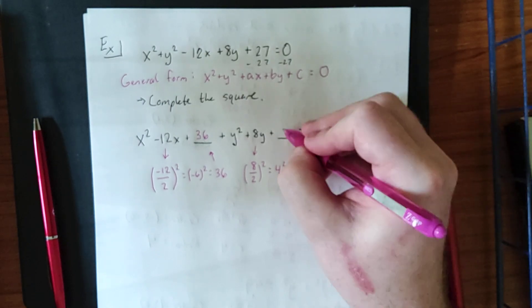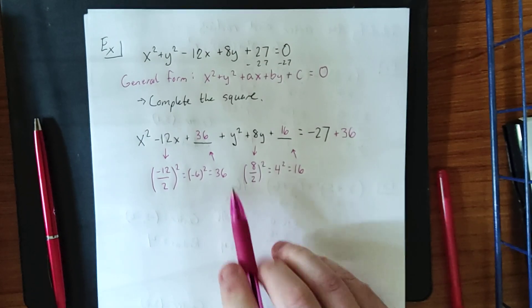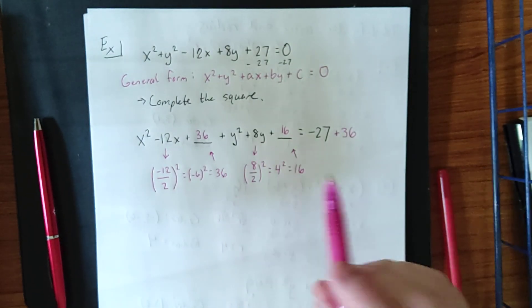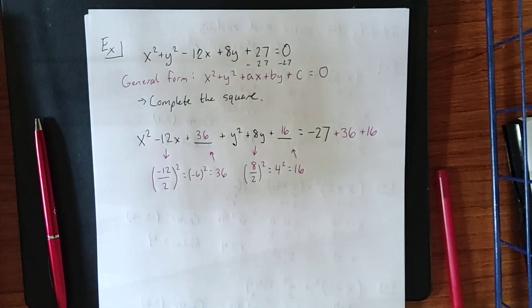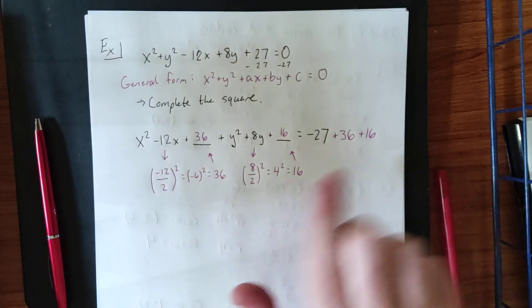16 is what we put right back up here, and now y squared plus 8y plus 16 will be a completed square. To balance out the fact that we just added 16 to the left-hand side, we also add 16 to the right-hand side.